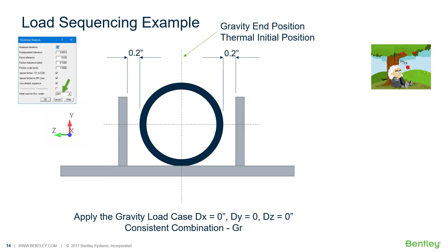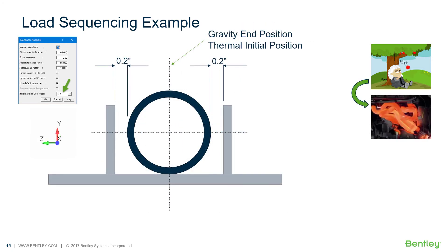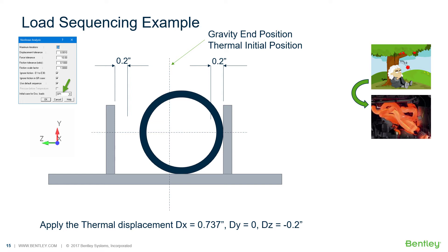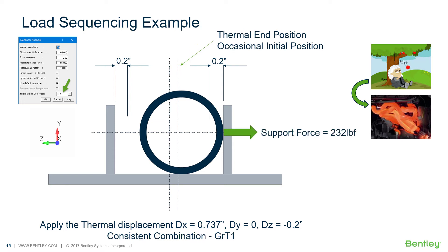The position of the pipe is now the end position of the gravity load case, and this is the initial position for the thermal load case. Next, the thermal load is applied with the end position of the gravity load case as the initial position. The pipe moves mainly axially but also 0.2 inches in the negative z direction up to the stop of the support. The gap is fully closed, applying a force of 232 pounds. This is combination GRT1.